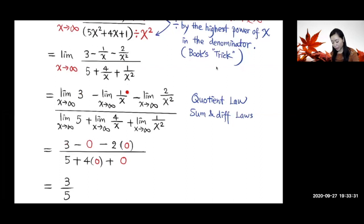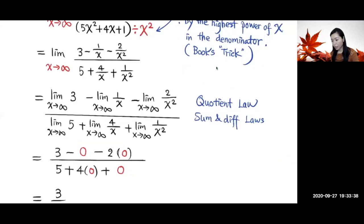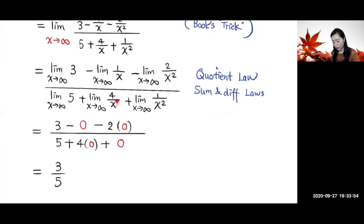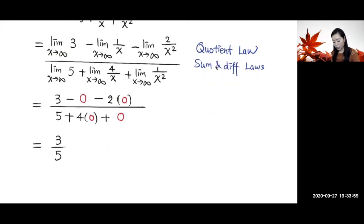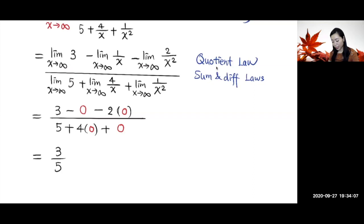The limit of the constant 3 is 3. By Theme A, the limit of 1/x as x goes to infinity is zero, so −1/x goes to zero. The limit of −2/x² is 2 times zero, also zero. Similarly, the denominator gives 5, and 4/x goes to 4 times zero. So the result is 3 over 5.